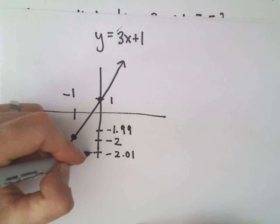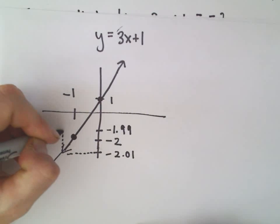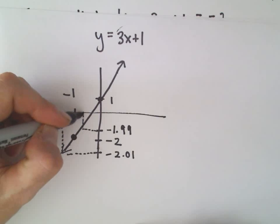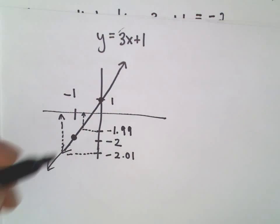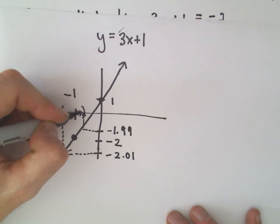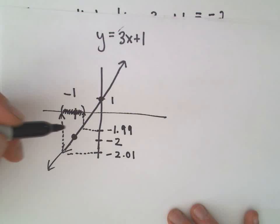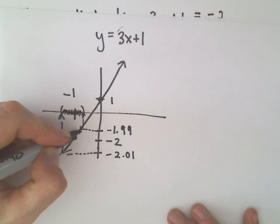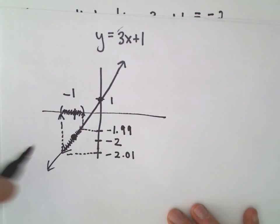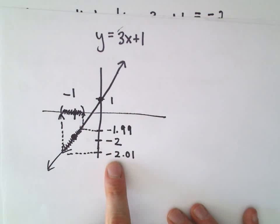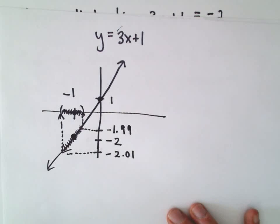So same thing as before, what we want to try to do is figure out the corresponding interval around the x value of negative 1. And we want to find that interval so that if I take any number inside of that interval, if I take any x coordinate inside of that interval, and I plug it into my function, I'm going to get a y value that's inside of, that's between the numbers negative 1.99, negative 2.01.